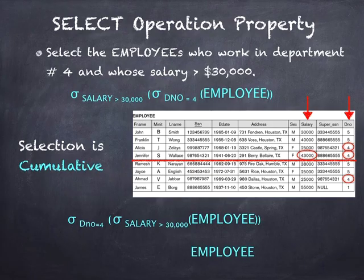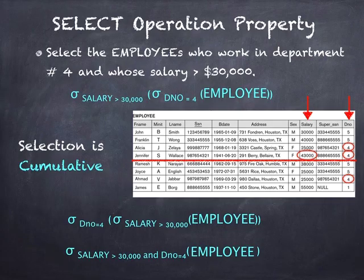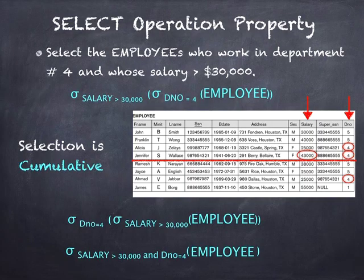Another method is to conjunct the two conditions directly using an AND operator — so we query for employees whose salary is greater than 30,000 AND who are in department number 4 simultaneously, checking both the salary and DNO attributes in parallel. This is because the selection operation is cumulative.